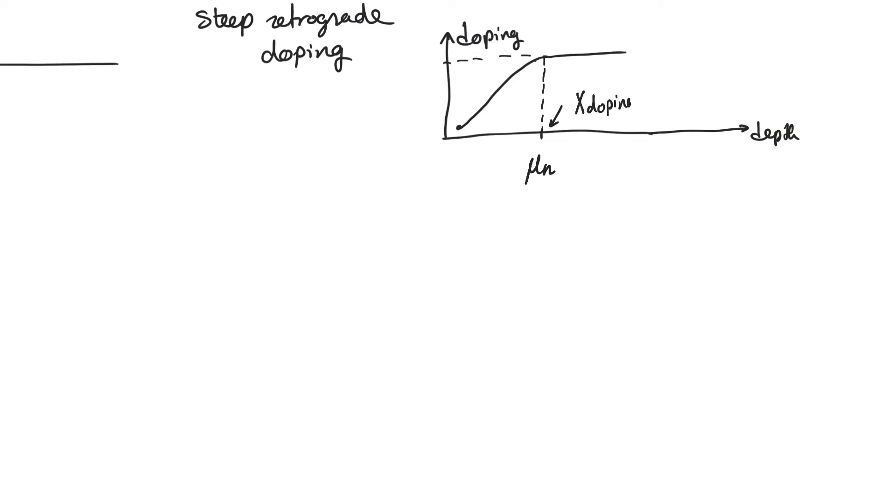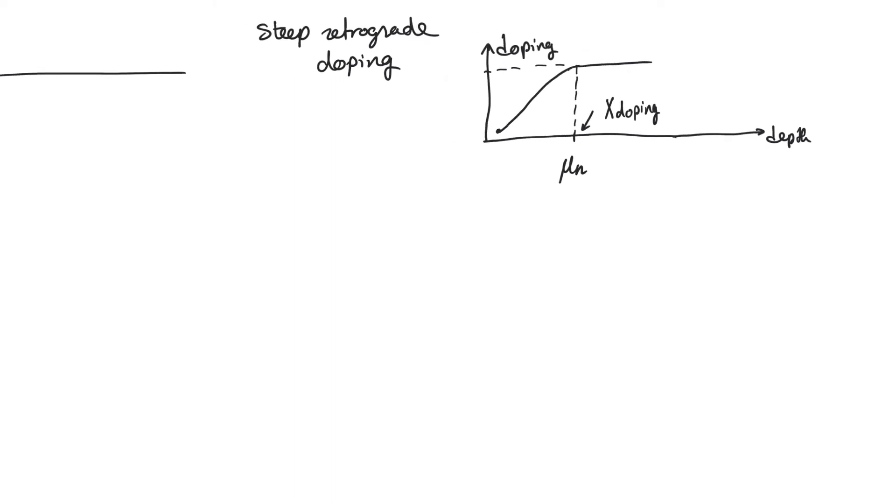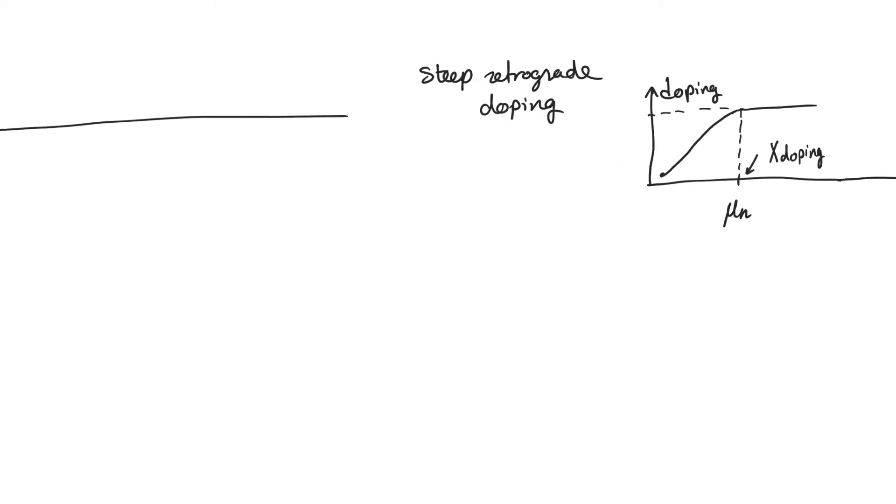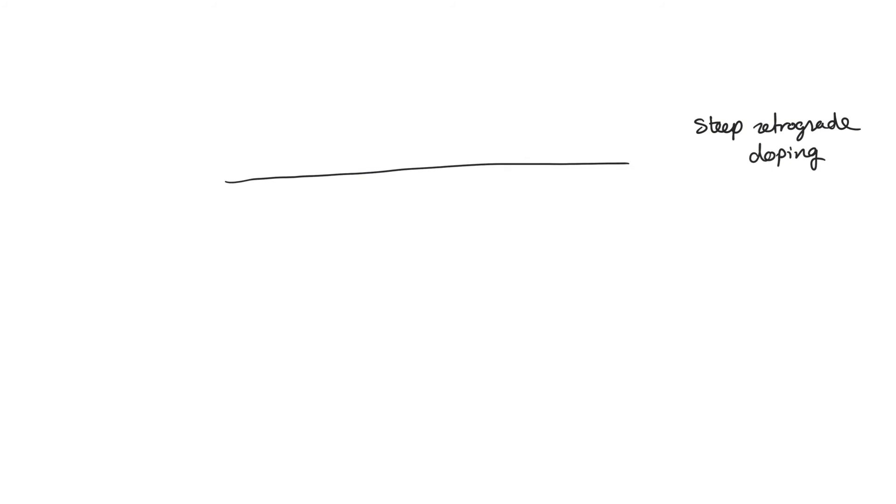Now going back to the transistor model, we find that the amount of charge below the oxide in this substrate below the oxide is going to be controlled by two capacitances. One of them is C-oxide and one of them is C-depletion. So this is the discussion we had when we discussed sub-threshold conduction.